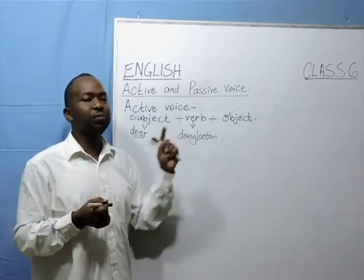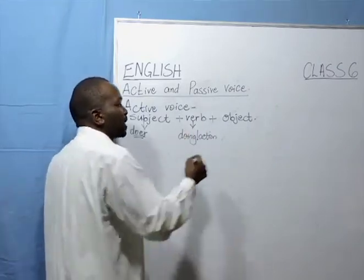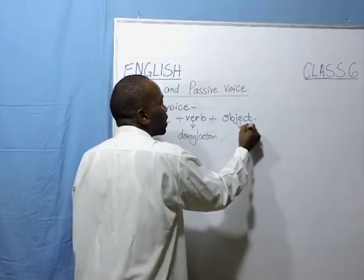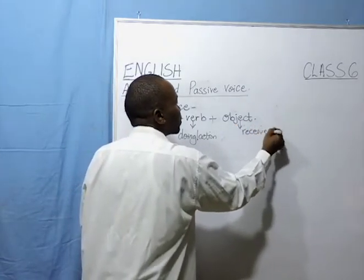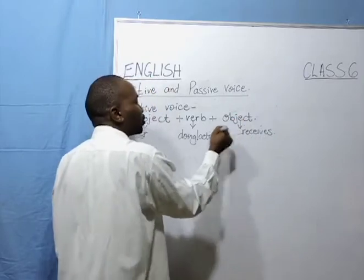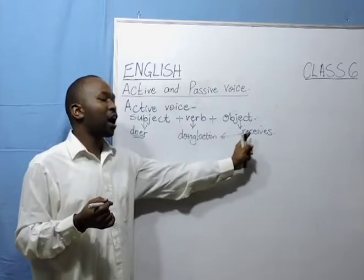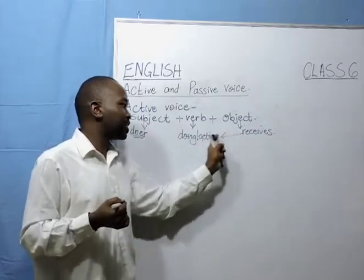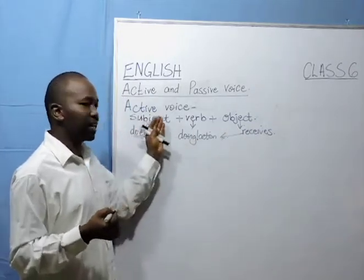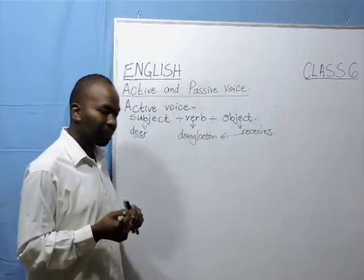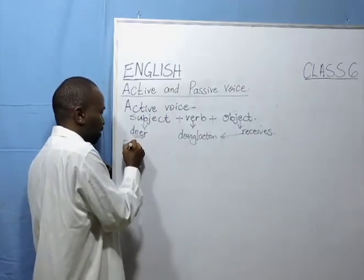What about the object? The object is what receives the action — what receives the action that is being done. So that is the pattern of writing the active voice. For example, in a sentence...